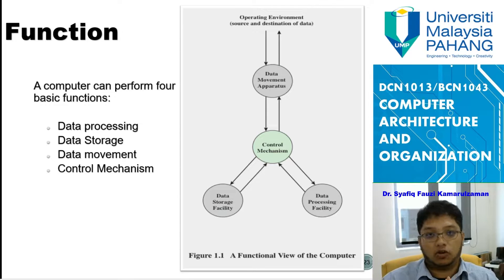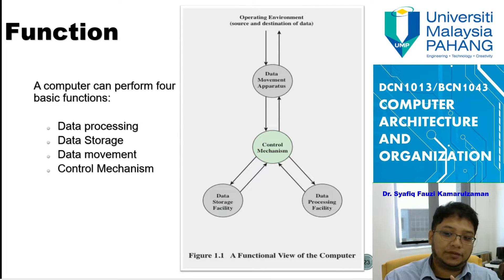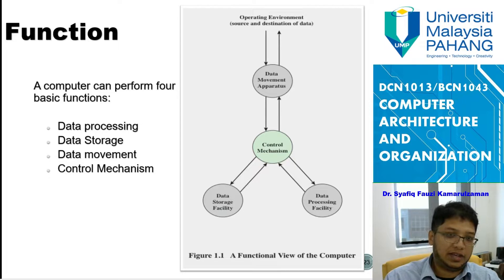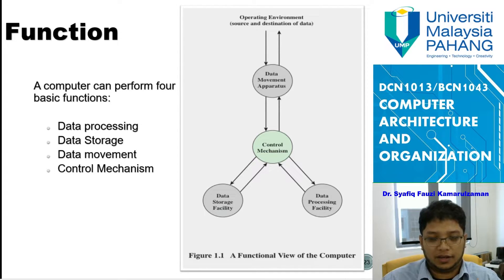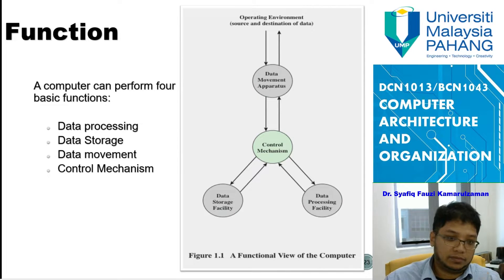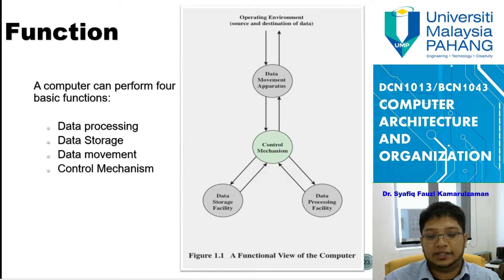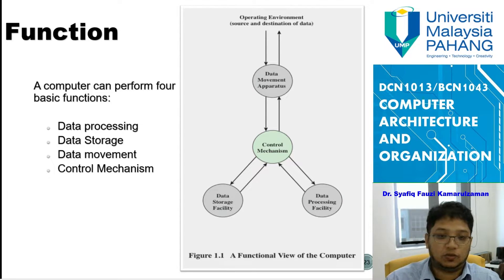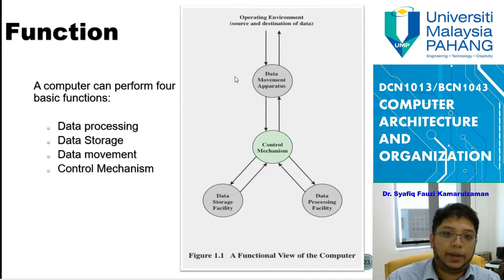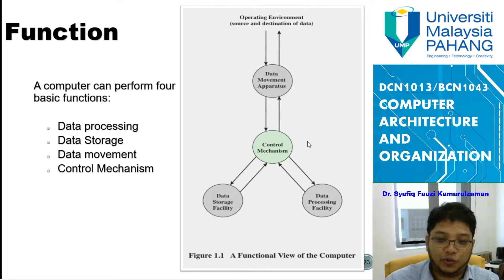There are four basic functions that a computer can operate, and the whole computer operates based on these four types. No matter how complex the task — gaming or using fancy software — it comes back to these four basic functions. The first is data processing, the second is data storage, the third is data movement, and the fourth is the control mechanism, which controls the operation of the other three.